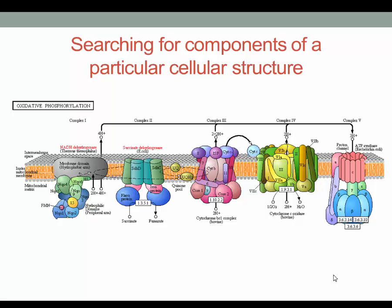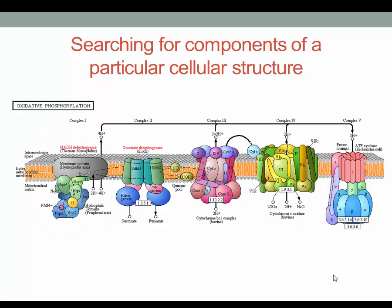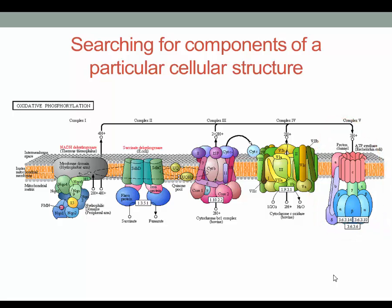Another image from KEGG illustrates the components of the respiratory electron transport chain. NADH dehydrogenase is on the left, and the ATP synthase complex is on the right. In this approach to gene annotation, components of structural features of a cell are identified and compared across genomes. The instructor would typically choose a poorly studied microbe in an attempt to define how that particular organism composes these structural features.